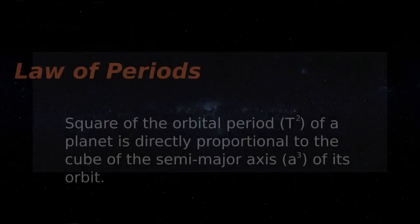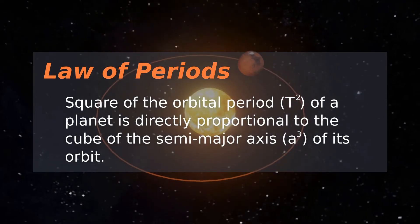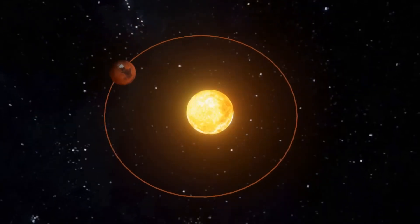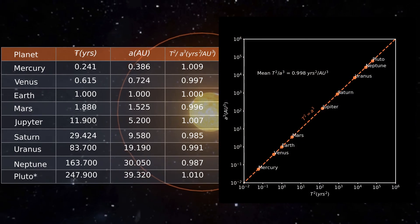This law is called the law of periods, which he published in 1619, 10 years after the other two. Kepler found this relation from the data of six planets known those days. Today, we have three more planets, but still the law is true.